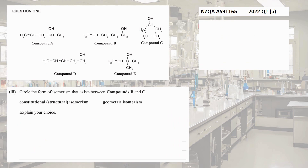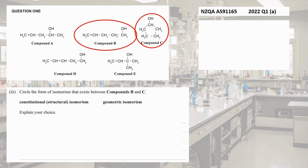Now let's look at 2022. They've given us five different compounds — A, B, C, and D. Question one, part three asks us to circle the type of isomerism that exists between B and C: either constitutional/structural isomers or geometric isomers. If they were geometric isomers they would need cis and trans, which requires a double bond to stop rotation. Compound B has a double bond but compound C doesn't, so they can't be cis and trans isomers.